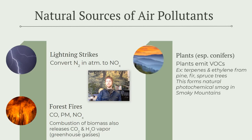Plants are another source of natural air pollutants. Many volatile organic compounds found in the atmosphere are emitted by plants, especially coniferous trees. Think of that strong, pungent pine odor when walking through a forest — those are VOCs. One class commonly emitted by plants is terpenes. The Smoky Mountains are a great example of natural photochemical smog, as the VOCs emitted by trees contribute to it.